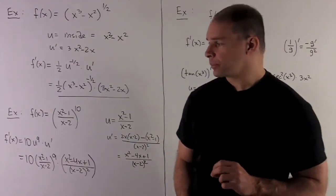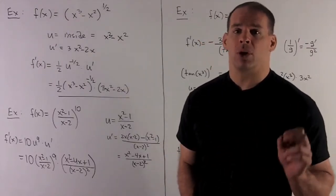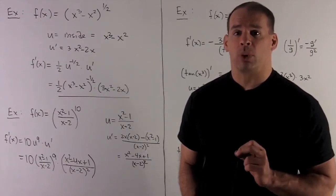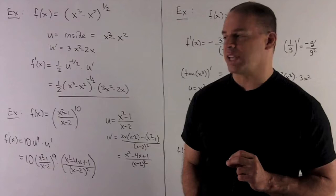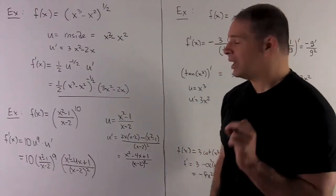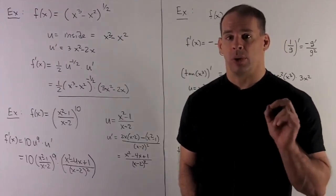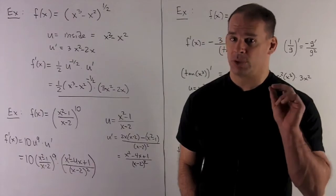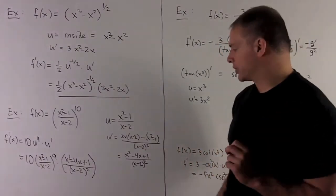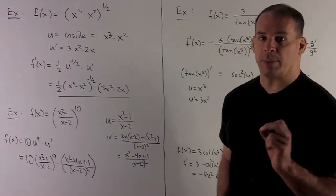Let's try another one. f of x is going to be equal to x squared minus 1 over x minus 2, raised to the tenth power. It's the same idea — I'm going to let u equal the inside: x squared minus 1 over x minus 2. We take the derivative of that using the quotient rule — low d high minus high d low over low squared. At the end of the day, u prime is going to be x squared minus 4x plus 1 over x minus 2 squared.